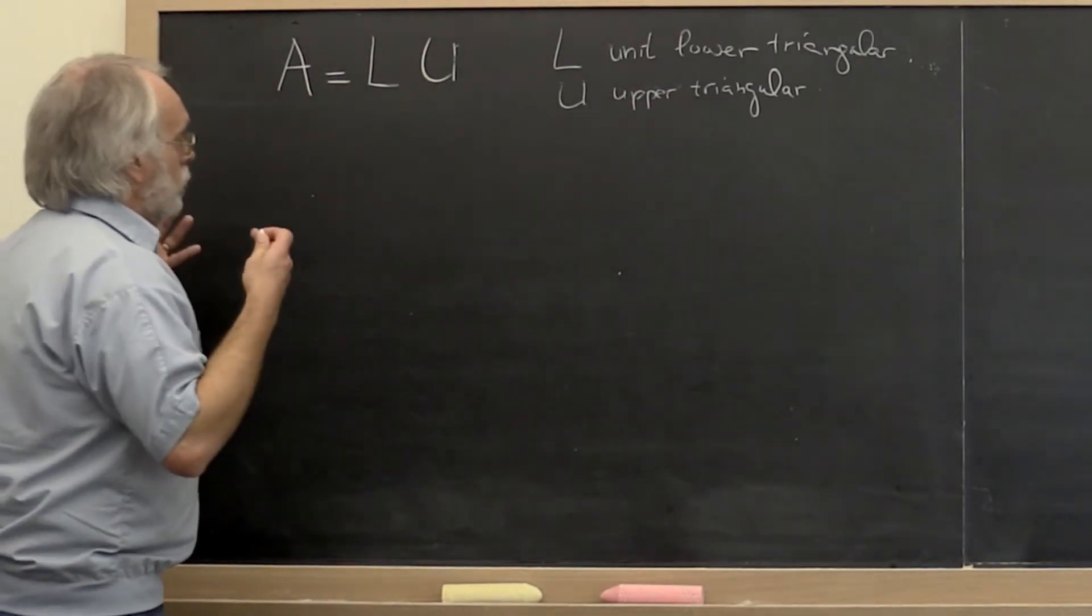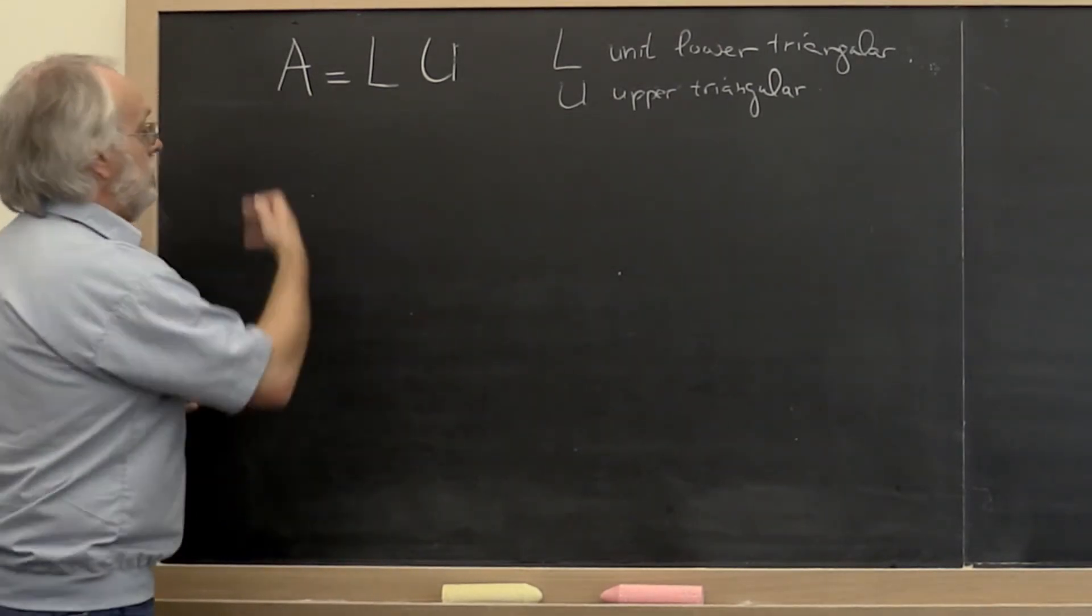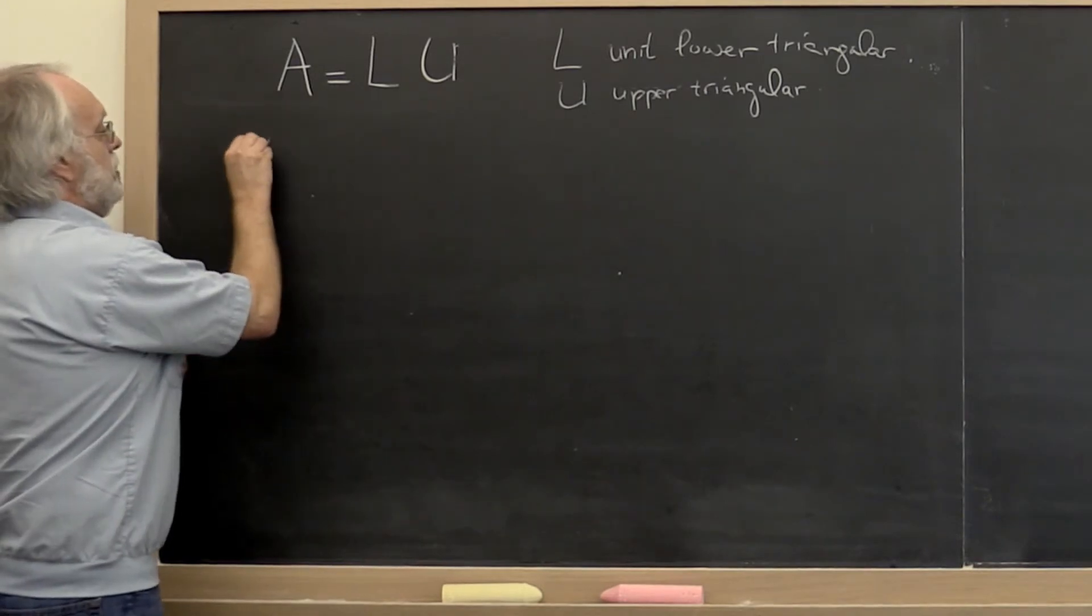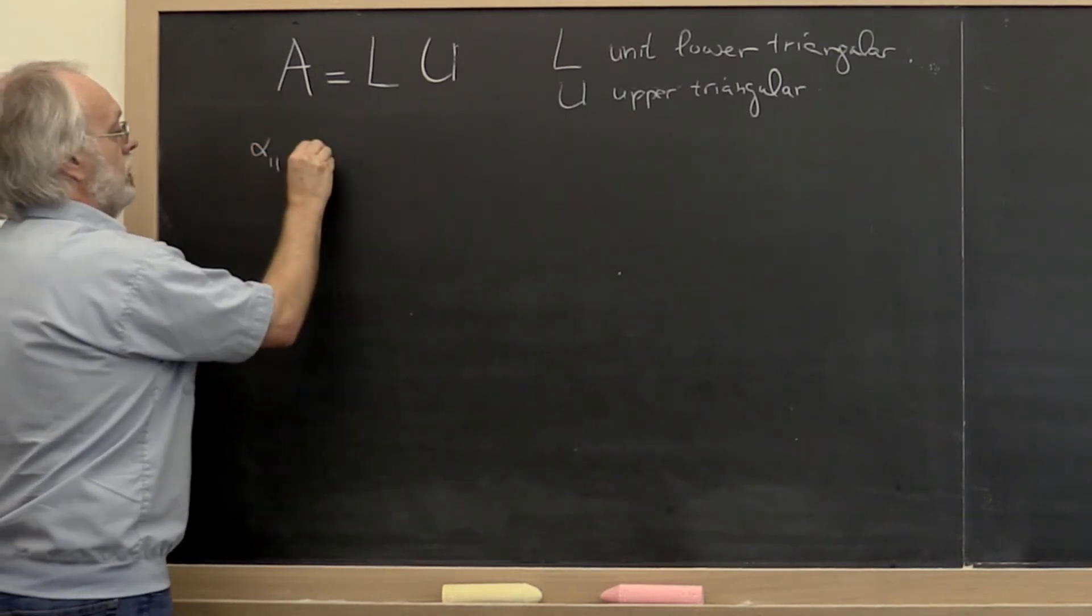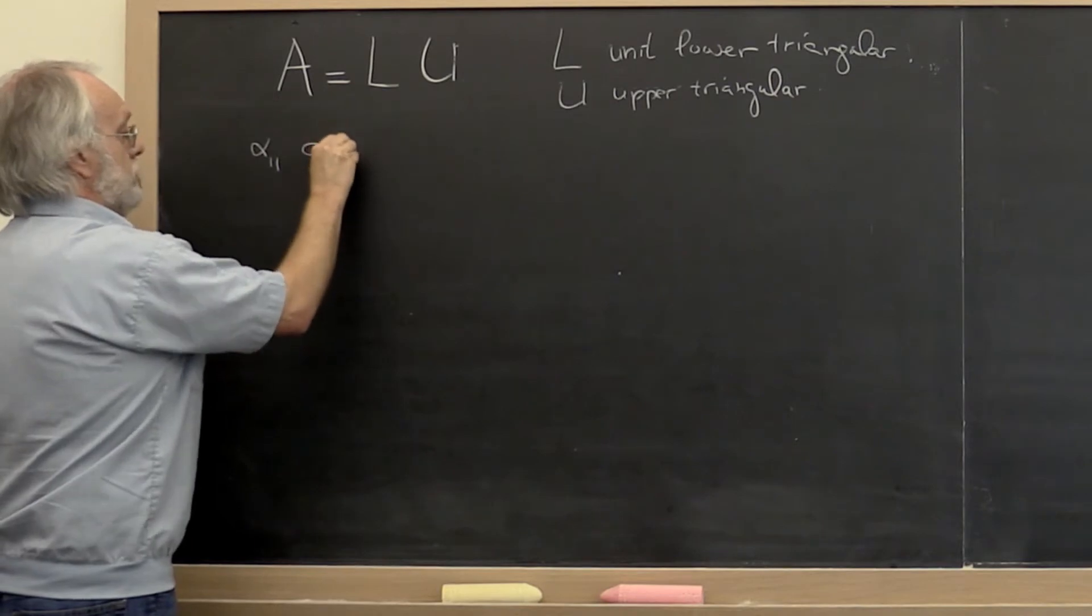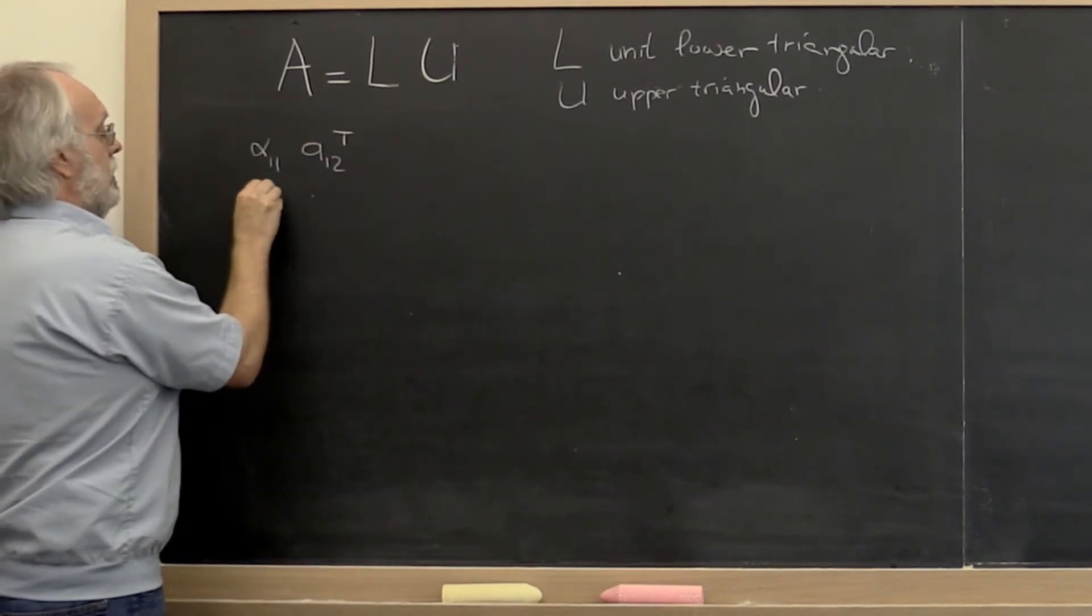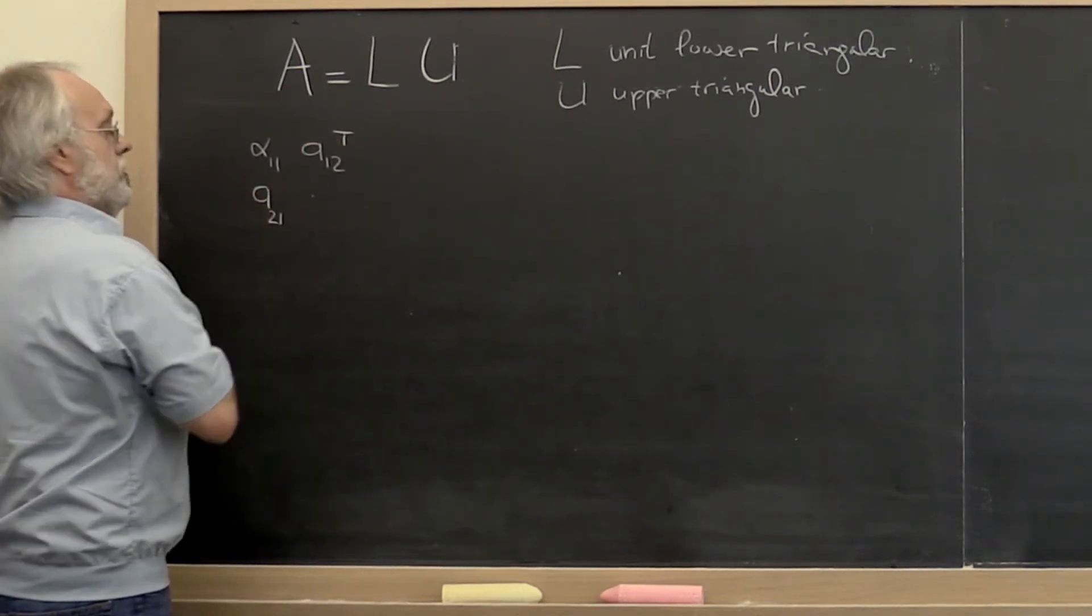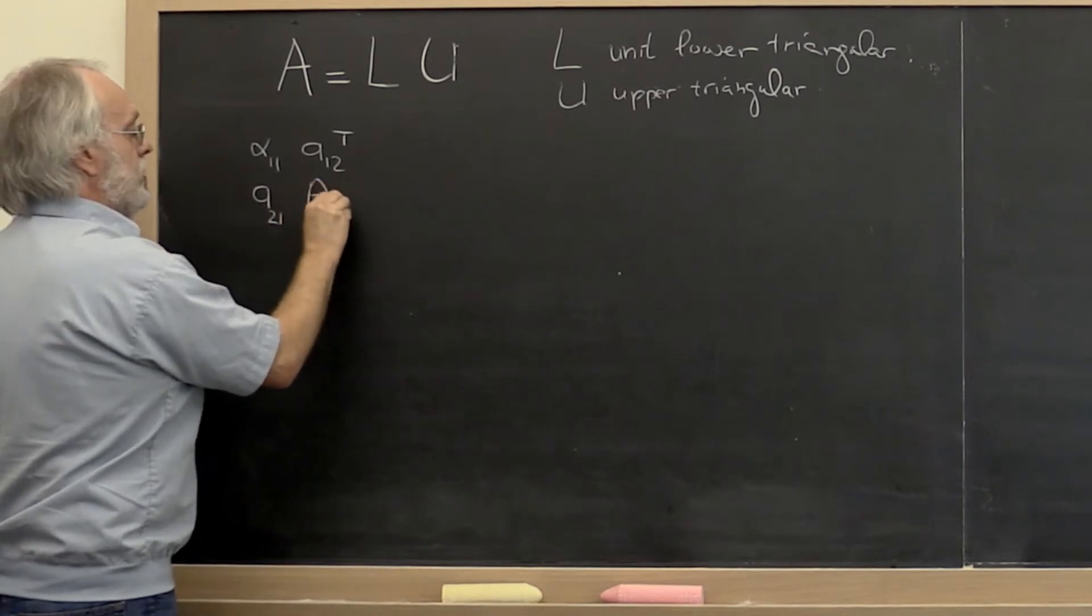The way we can capture that is by saying that A should be partitioned into alpha 1 1, A 1 2 transpose (the rest of that first row), the rest of that first column, and the matrix A 2 2.